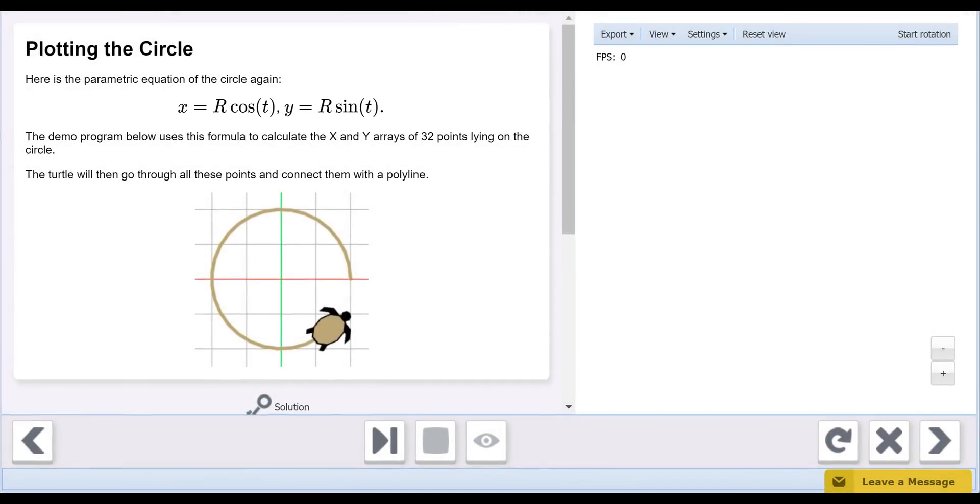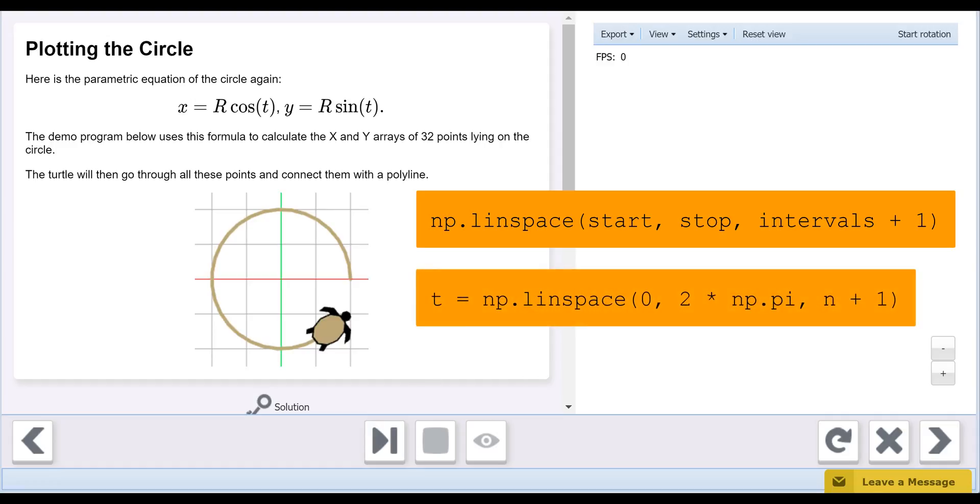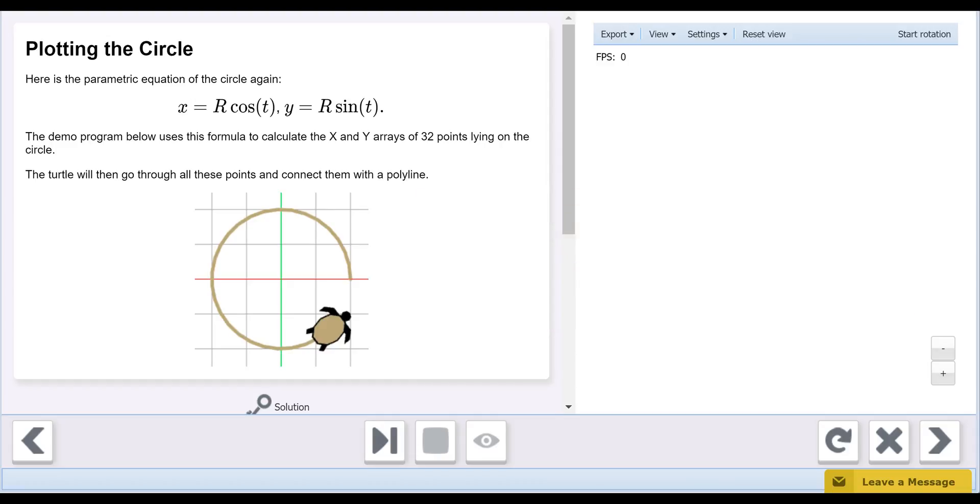We need decent sized arrays of X and Y values to draw a smooth circle. This is where the Linspace function is helpful. We can create our arrays based on the cosine and sine of t, using the Linspace function, starting from 0 and ending at 2 pi, for n plus 1 points. Let's step through the demonstration to see how this works.